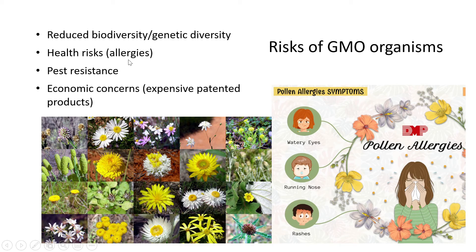There could also be some health risks, like causing allergies in our bodies. This could apply to livestock we eat, but generally it's more to do with plant types. Certain pollen types cause allergies — rashes, runny noses, and watery eyes. While it's not always a deadly thing, in severe cases it can potentially cause death, especially if it affects the lungs and someone can't breathe and goes into shock.